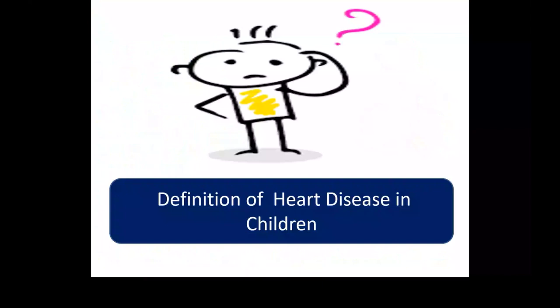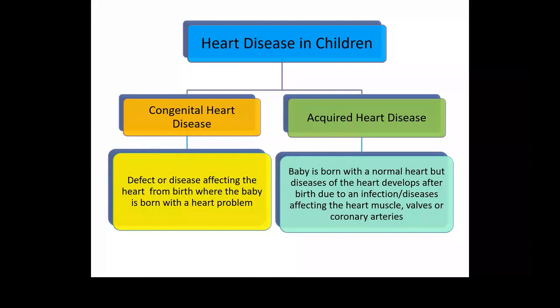Coming to the definition of heart disease in children, we can broadly classify them into congenital and acquired. Congenital heart disease means these babies are born with a defect or disease affecting their heart from birth. Acquired heart disease is where the baby is born with a normal heart but later on, due to some infection or disease process affecting the heart muscle, valves, or coronary arteries, they develop a disease of the heart.